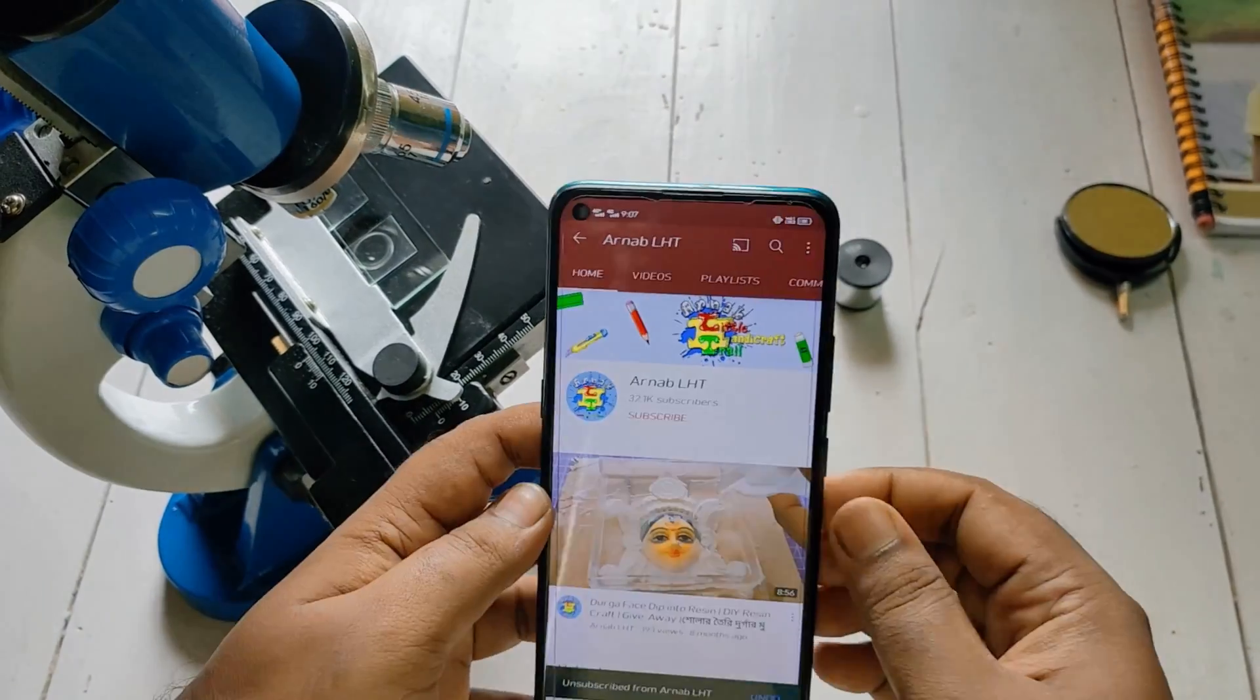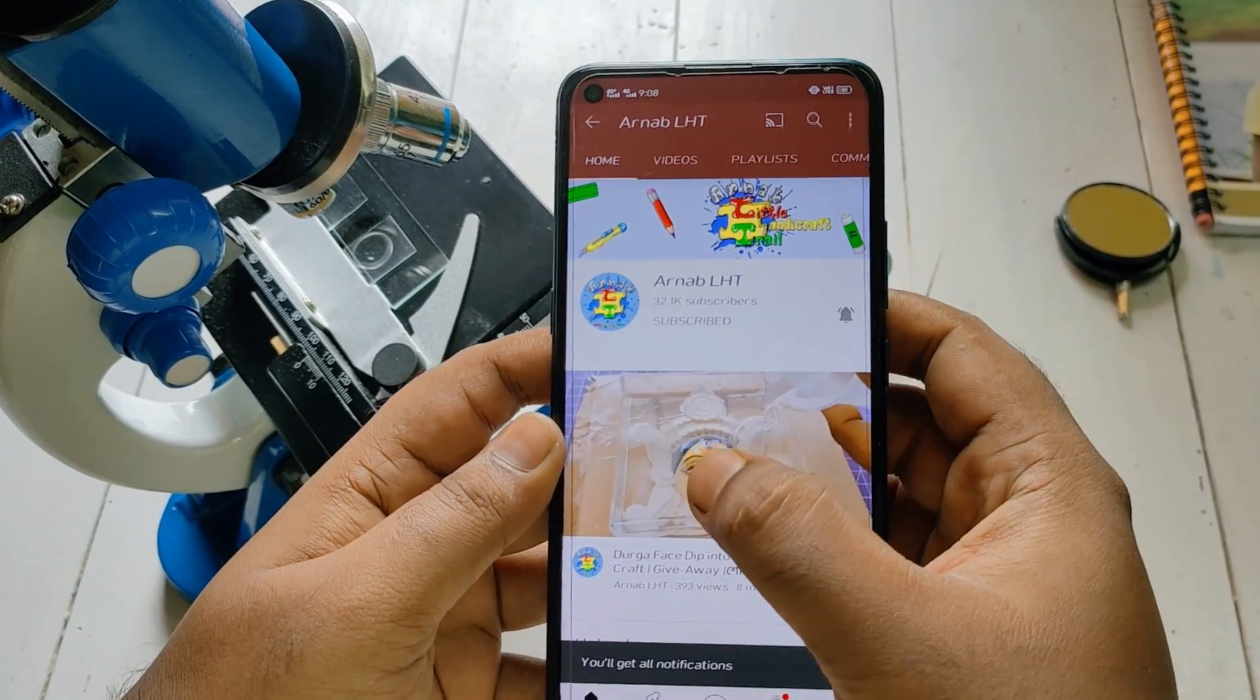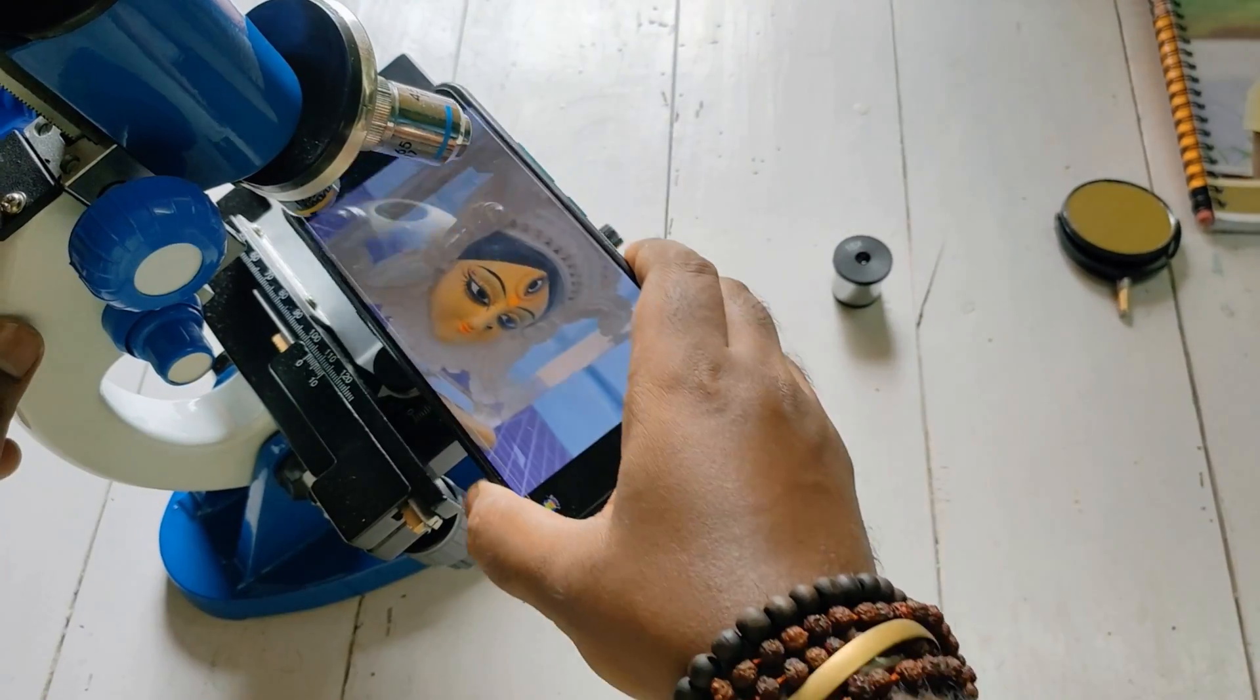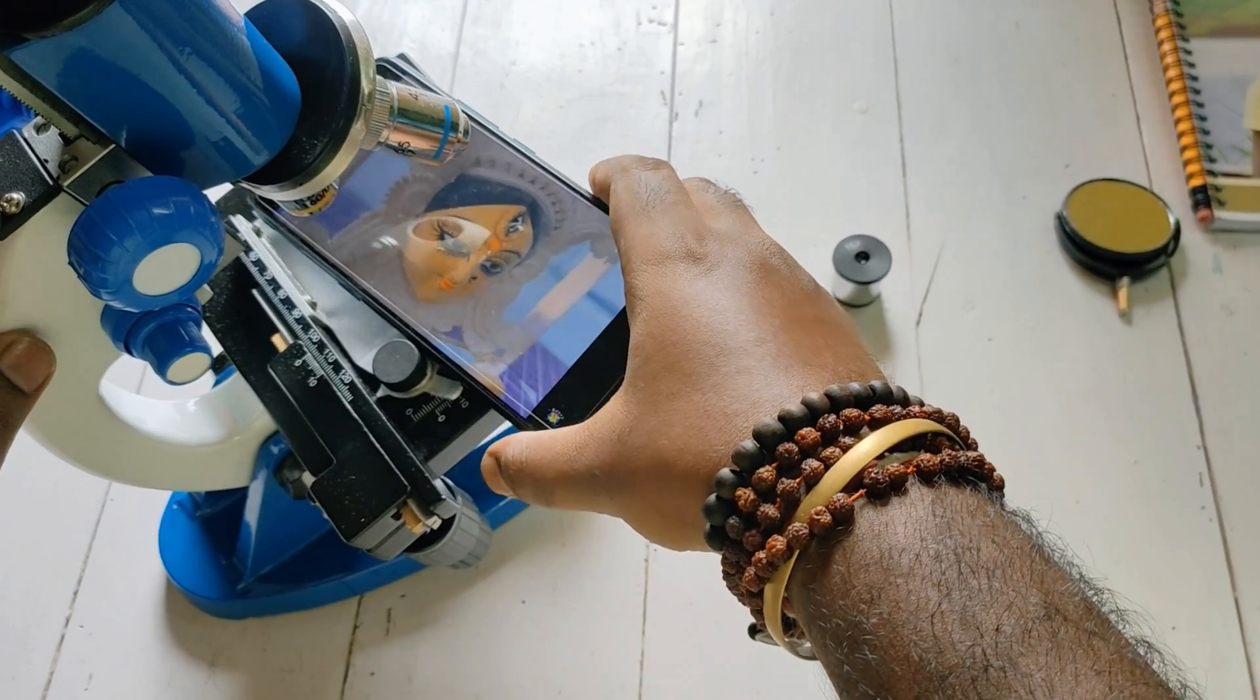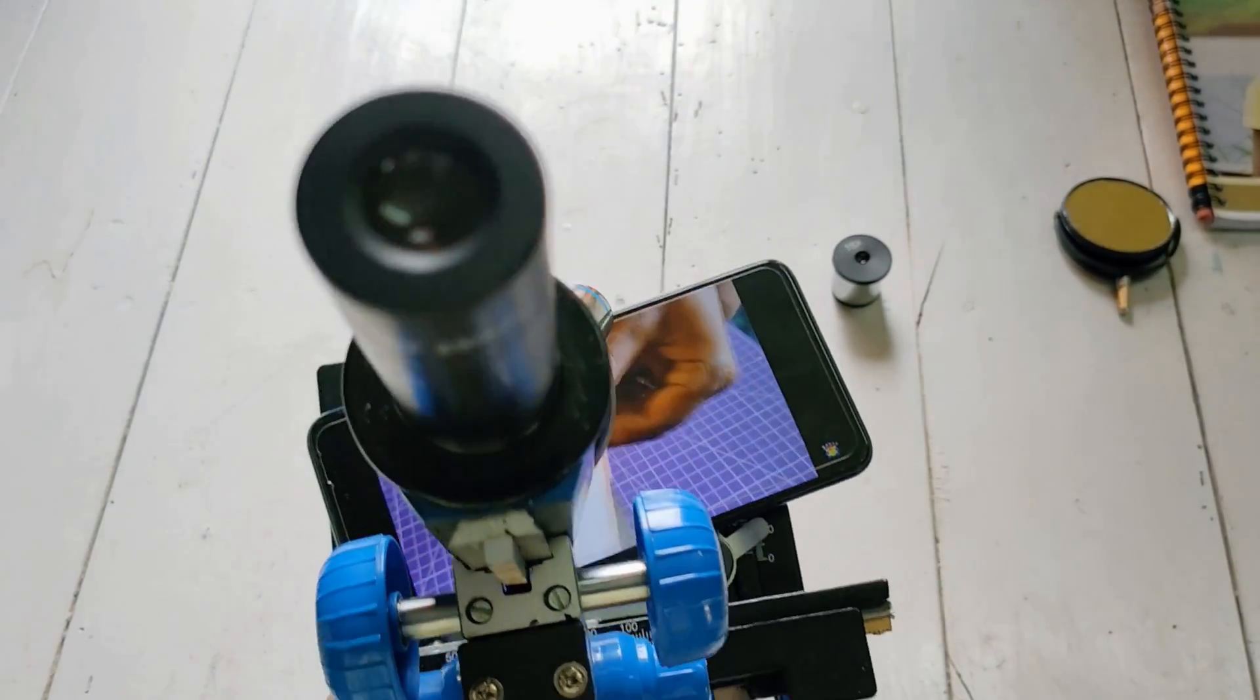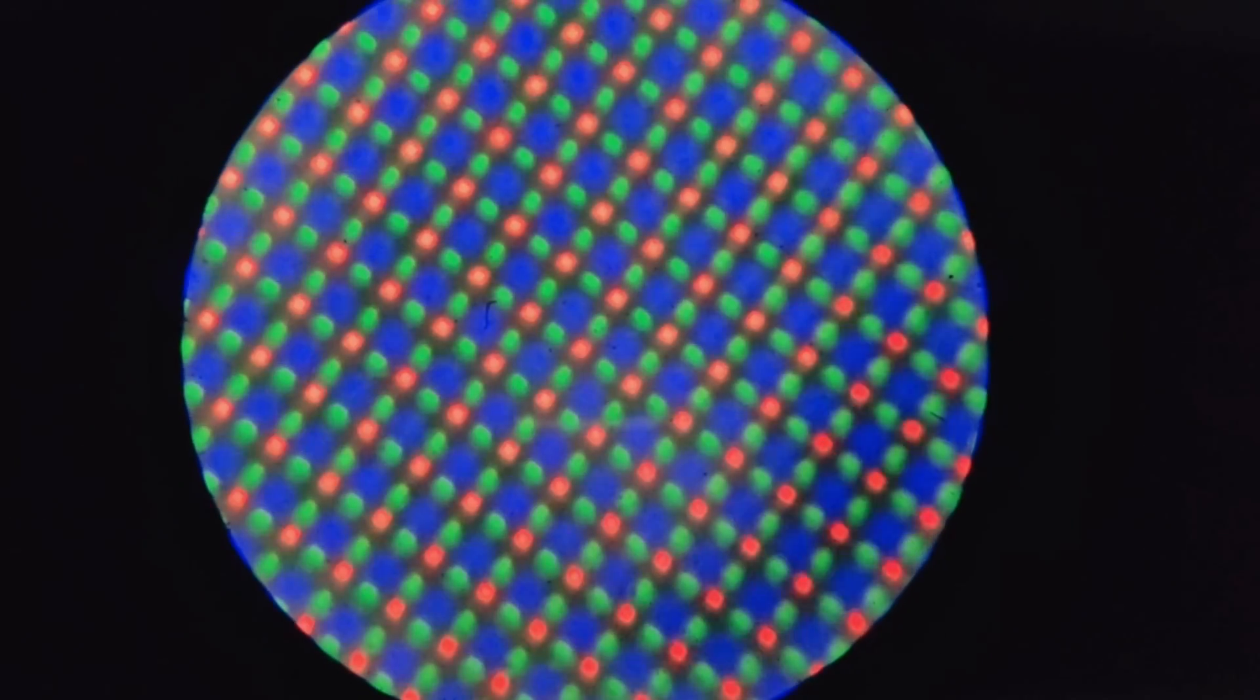Now time for this mobile. First of all, subscribe to this channel LHD and press the bell icon to get the video first when I upload a new one. So now play this video and see whether I can see the pixels under this microscope. And let's see. Oh yes, yes, yes! These are the tiny pixels in 100x zoom. Amazing, isn't it?